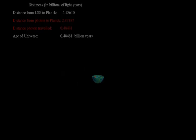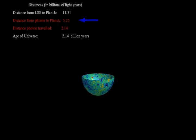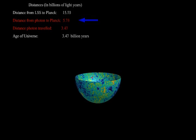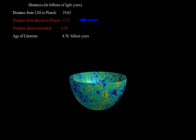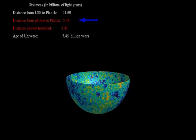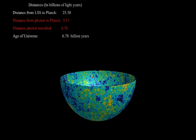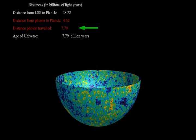Ready? Let's start. The blue arrow indicates the distance the photon has to travel until it reaches Planck. This number is a little misleading as it only counts the amount of distance currently between the photon and Planck. The photon has to travel through this distance and any new space created by the expansion of the universe between it and Planck.